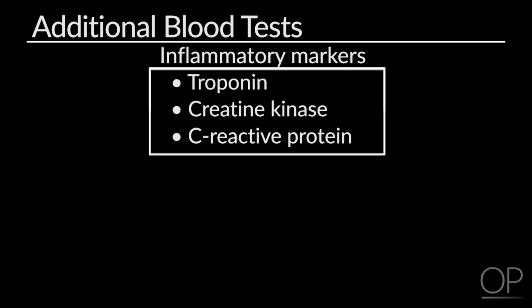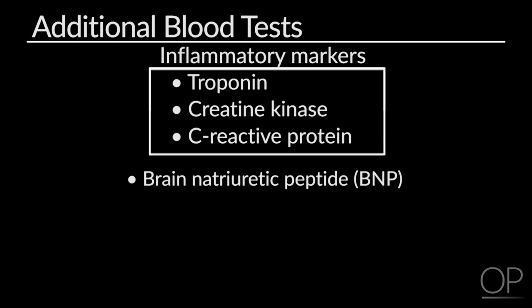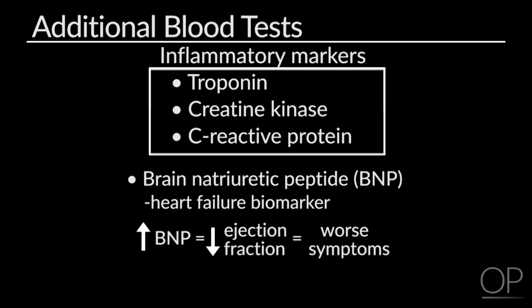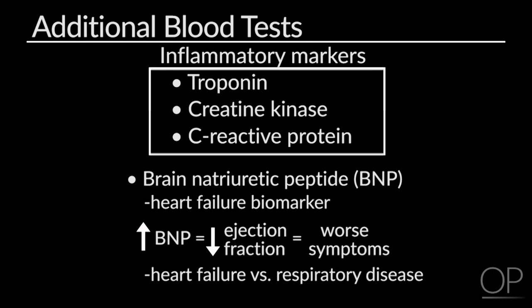Another important biomarker is brain natriuretic peptide, otherwise known as BNP. BNP has been extensively evaluated in an adult population as a sensitive and specific biomarker for patients with heart failure, and it can correlate with the severity of disease—with an increase in BNP correlating with worse ejection fraction and more severe symptoms. Its utility in the pediatric population is expanding greatly, with studies showing BNP can discriminate patients with heart failure symptoms versus other types of respiratory diseases such as asthma or restrictive pulmonary disease.